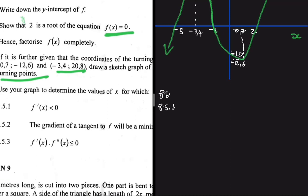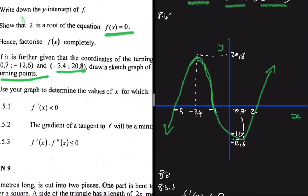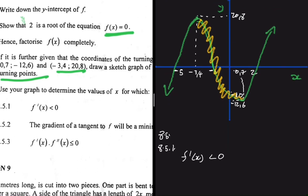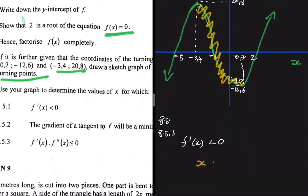8.5.1: determine the values of x for which f'(x) is less than zero. f'(x) is the gradient of our function, so we need values where the gradient is negative — that is where the graph is sloping downward. We can see the graph slopes down between our two turning points. So f'(x) < 0 when x is between -3.4 and 0.7.